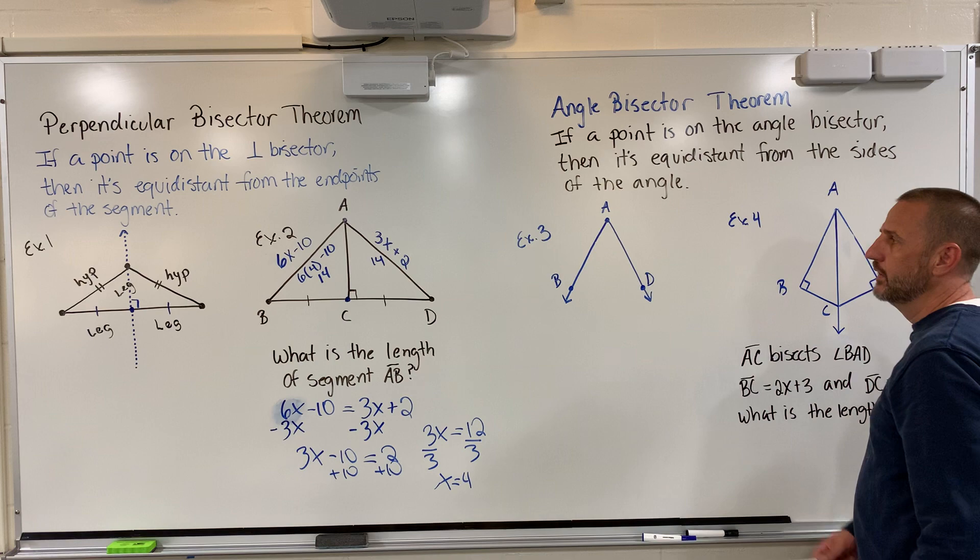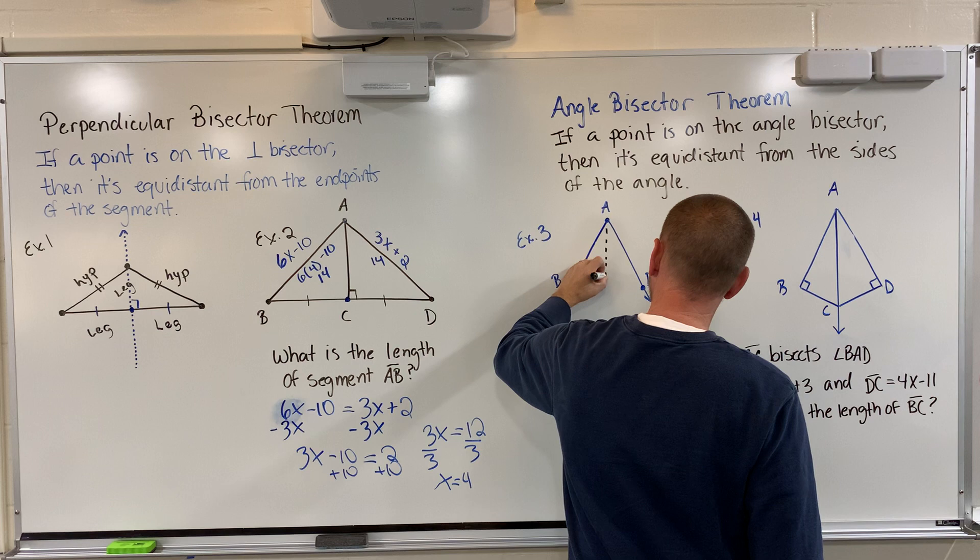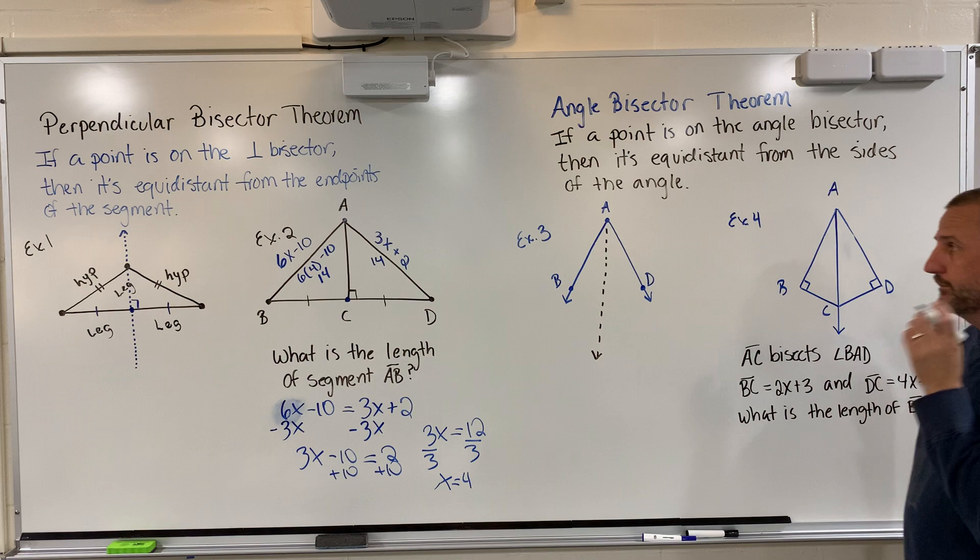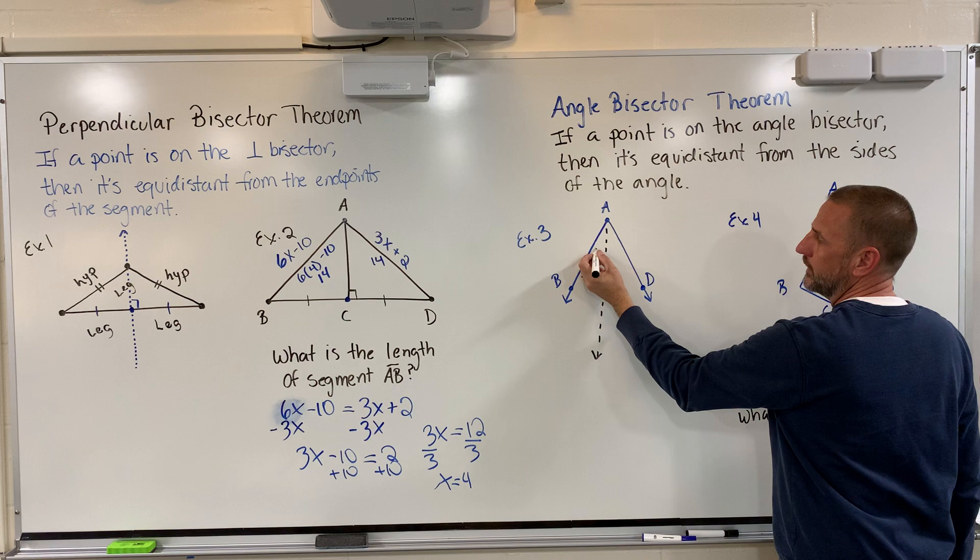I'm going to draw, to the best of my ability, I'm going to eyeball it, but I'm going to draw a line that looks to be in the middle. If it's an angle bisector, it's going to divide this into two congruent angles.